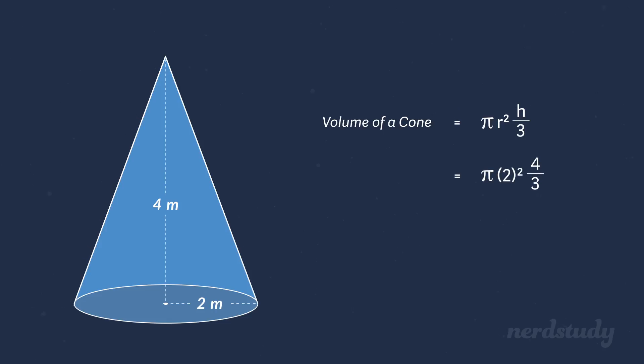So all we have to do is plug them into our equation. Pi times 2 squared times 4 over 3, which if we calculate equals to roughly 16.755 meters cubed.